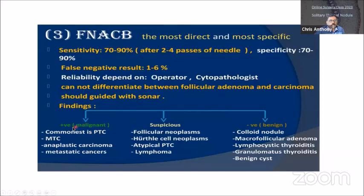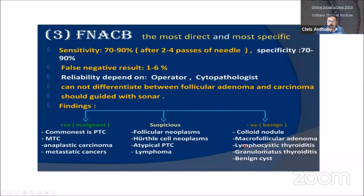After FNAC, the result can be: positive — usually papillary thyroid carcinoma, medullary thyroid carcinoma, anaplastic, and metastatic cancers; suspicious — follicular neoplasm or Hurthle cell neoplasm; or negative — colloid nodule, follicular adenomas, thyroiditis, and granulomatous disease. The most important goal is to catch the positive malignant cases by FNAC using the Bethesda classification: category 1 is non-diagnostic (poor sample), 2 is benign, 3 is atypical, 4 is follicular neoplasm/suspicious, 5 is suspicious of malignancy, and 6 is malignant.